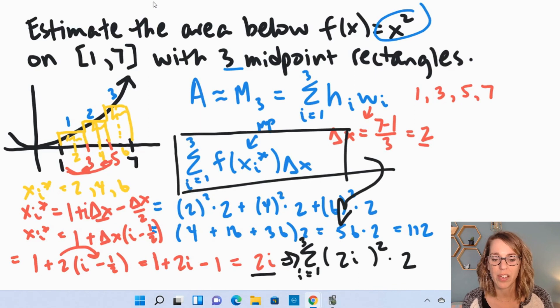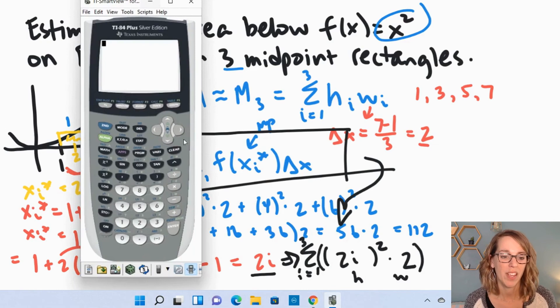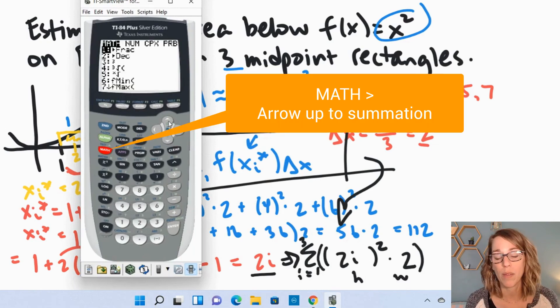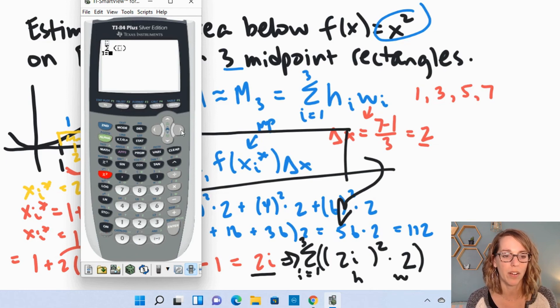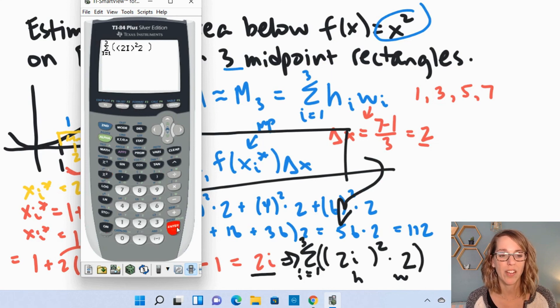To get this into the calculator, I need just one additional set of parentheses so that both my height and my width are part of the summation. Let's get that into the calculator. I'm going to go into the math menu, arrow up to choose summation, and then hit enter. And now I want i equals 1 to 3. So i is alpha x squared 1, right arrow to get to 3. I need an extra set of parentheses here, so 2i squared, and then times my 2. And then I hit enter, and I end up with that same area of 112.